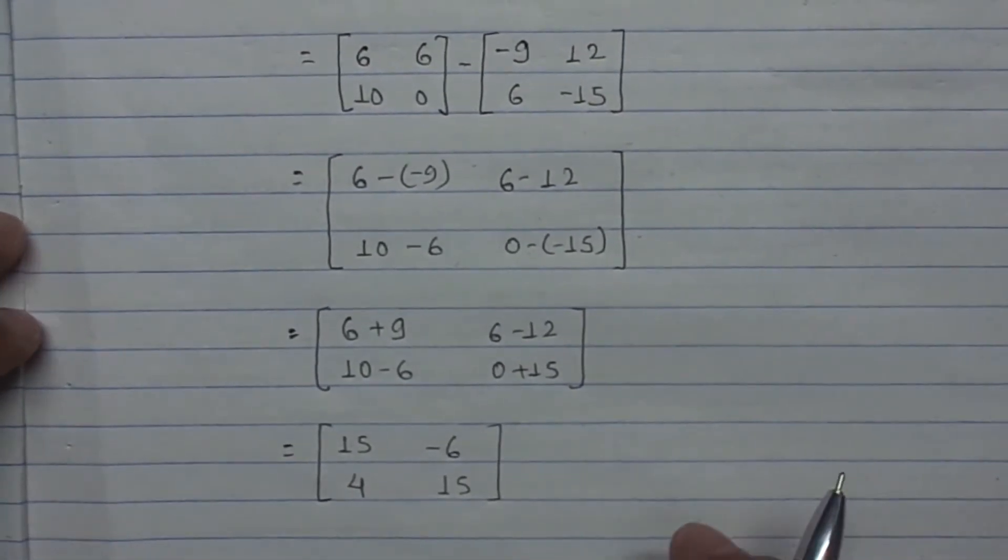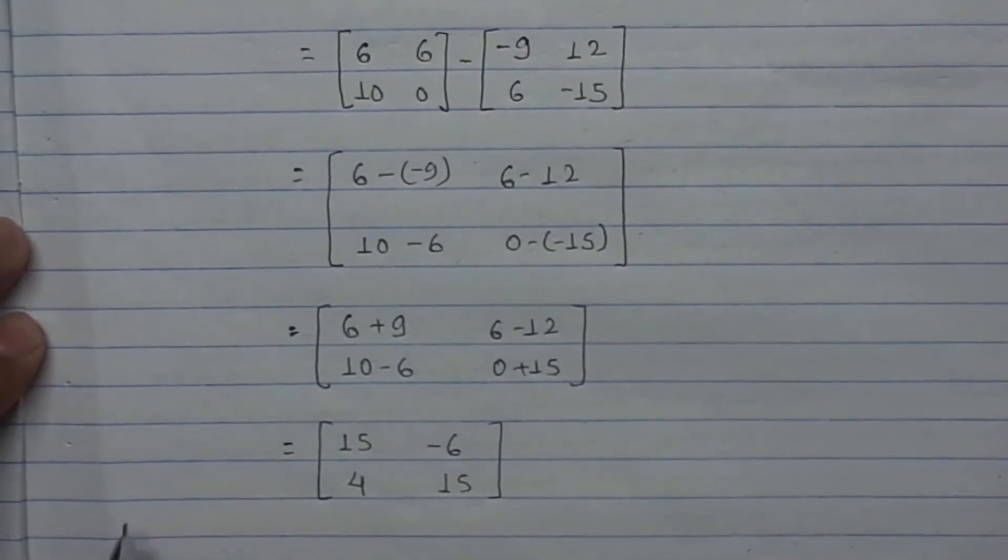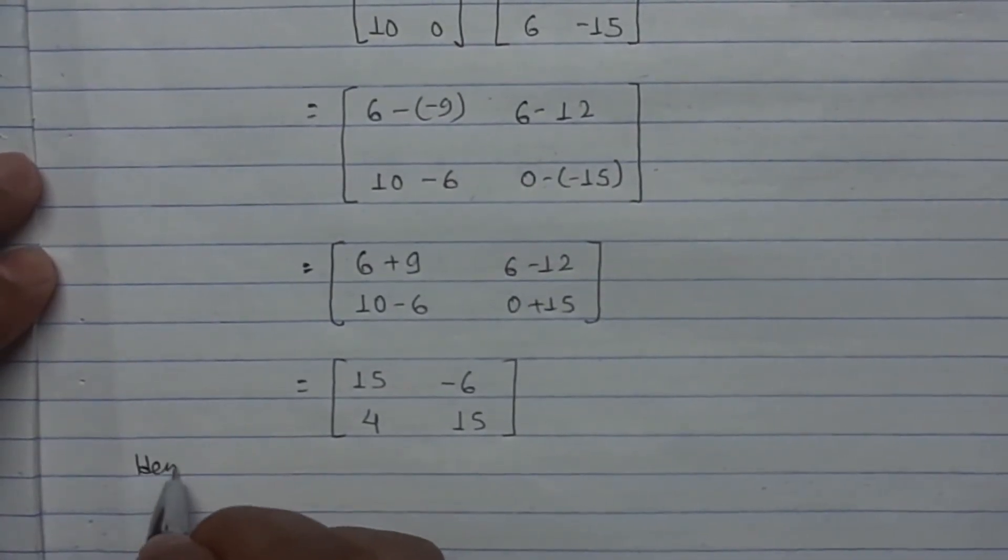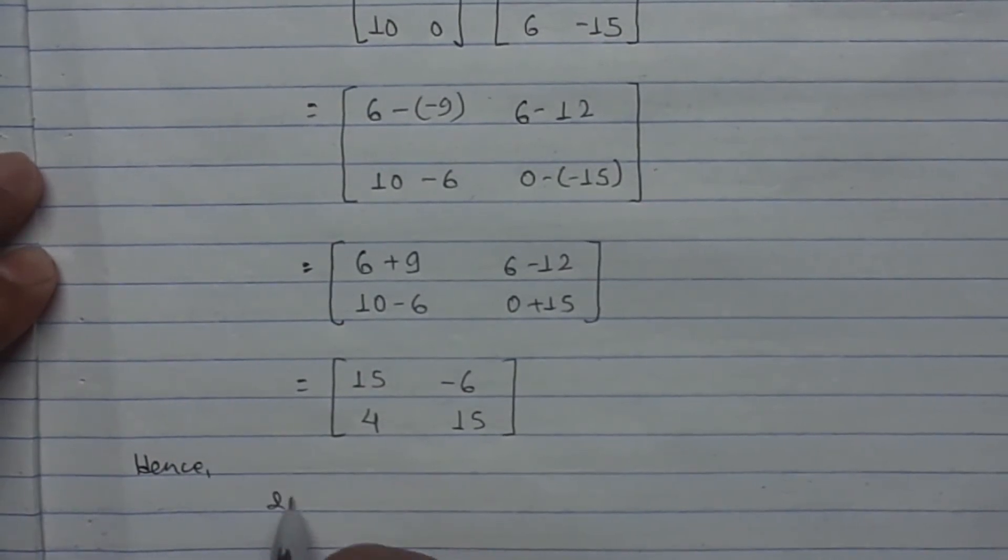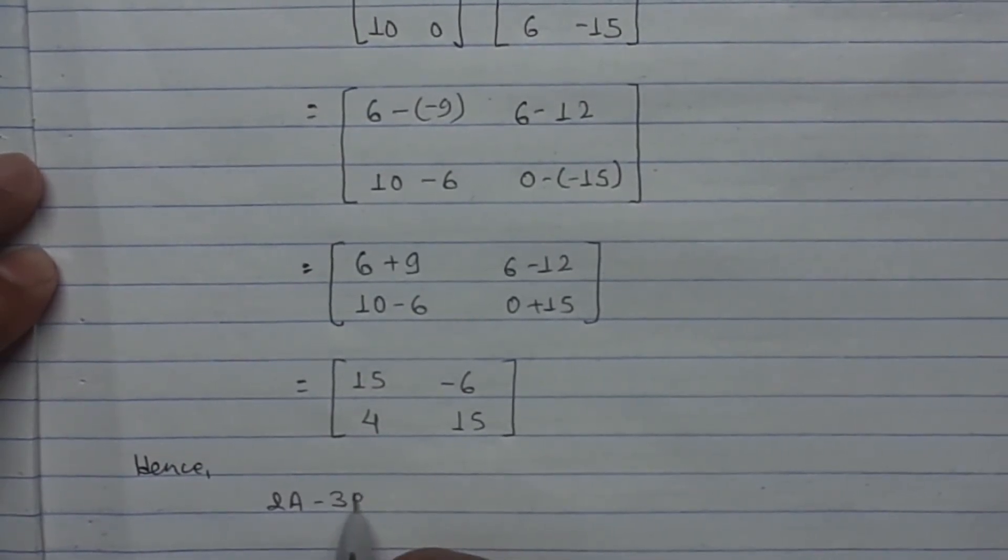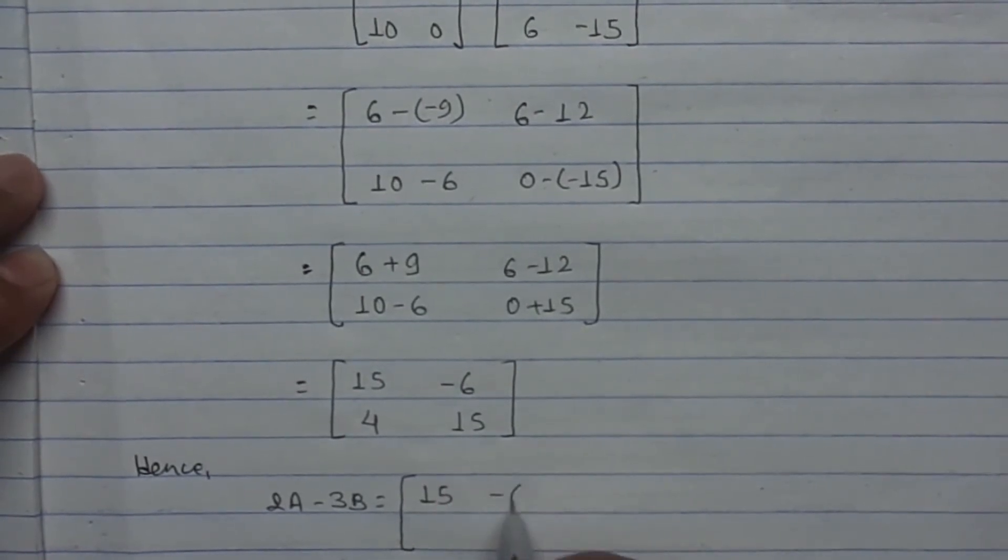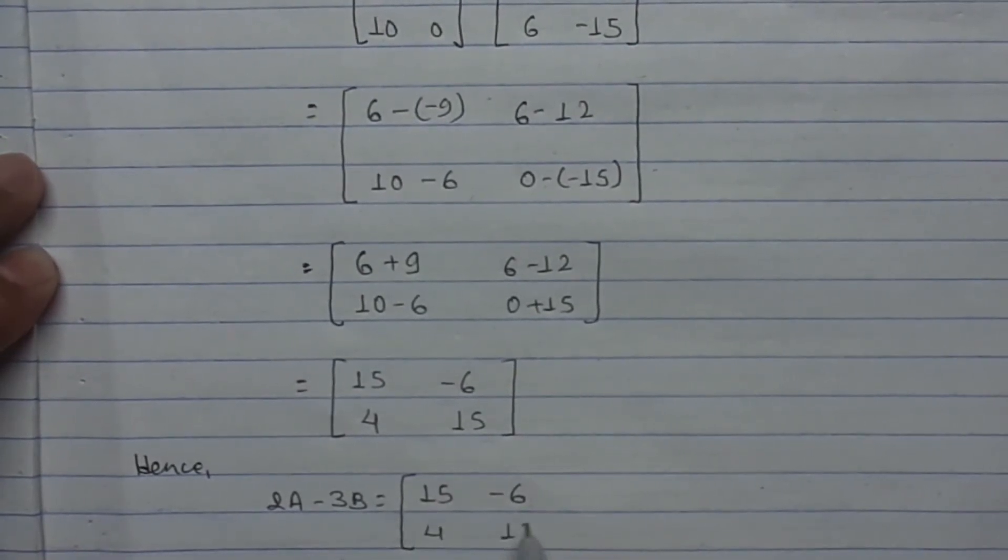Now the answer is obtained. Hence, write the conclusion. Hence, 2A minus 3B is equal to [15 -6; 4 15].